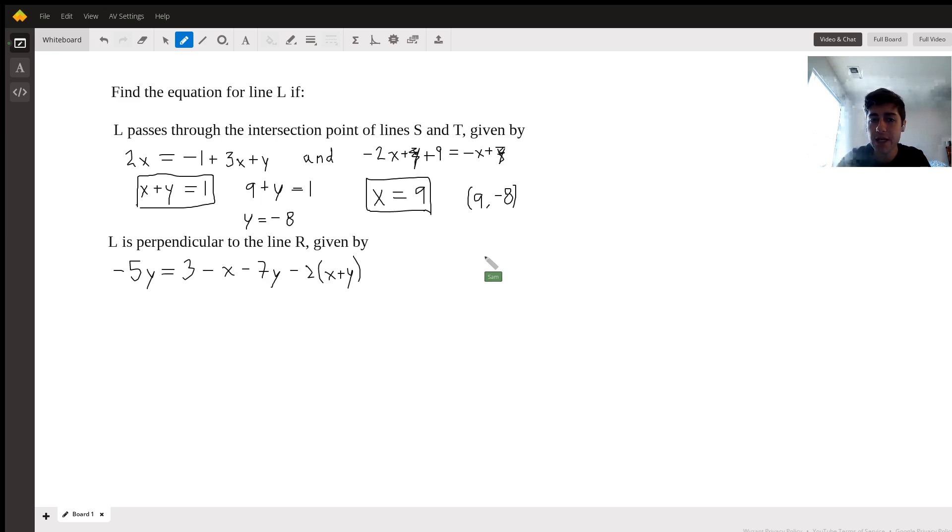But knowing one point on the line is simply not enough information. We either need to know another point on the line, or we need to know the slope of the line we're trying to find. Luckily, the second fact given to us is that L is perpendicular to the line R, which is described by this equation down here, and we're going to want to simplify that as well.